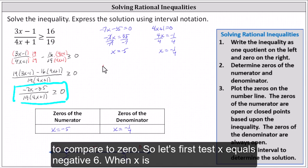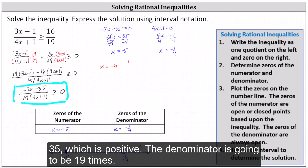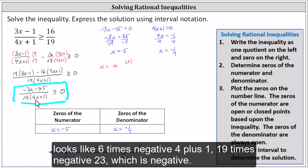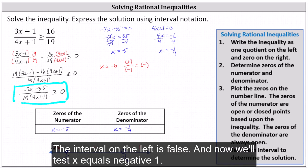Testing x = -6: the numerator is -7 times -6, which is 42, minus 35, which is positive. The denominator is 19 times (4(-6) + 1) = 19 times -23, which is negative. A positive divided by a negative is always negative. A negative number is never greater than or equal to zero, so the interval on the left is false.